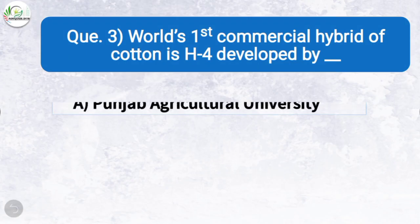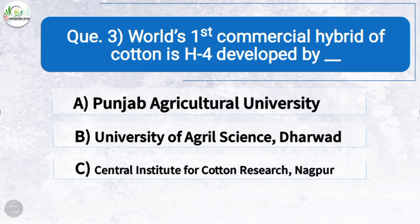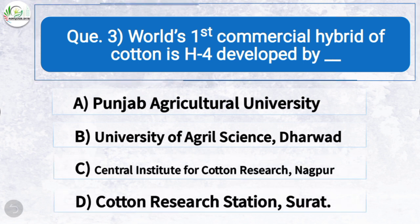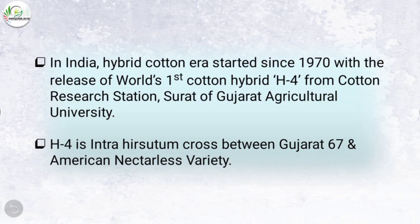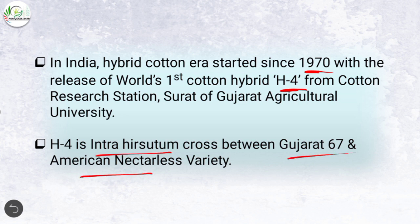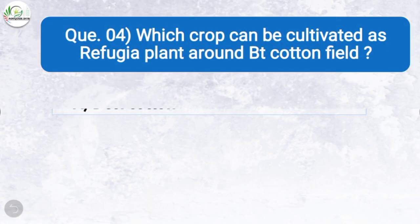Question three: World's first commercial hybrid of cotton is H4, developed by — the correct answer is option D: Cotton Research Station located in Surat. In India, the hybrid cotton era started since 1970 with the release of world's first cotton hybrid H4 from Cotton Research Station, Surat, Gujarat Agricultural University. H4 is an intra-hirsutum cross between Gujarat 67 and American Nectarless variety.